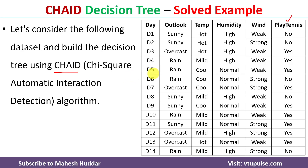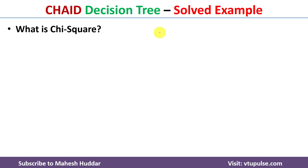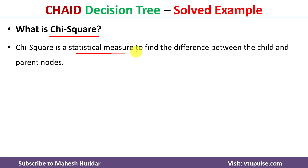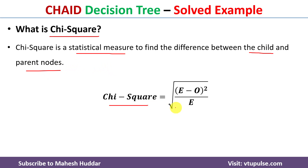Whenever we want to build a decision tree, we first need to identify the attribute which has maximum importance. We consider that as the root attribute and then start building the tree. The question is: how do we identify the attribute with maximum importance? We calculate the chi-square value for each attribute, and the one with the maximum value is considered the most important. Chi-square is a statistical measure used to find the difference between child and parent nodes. The equation is: chi-square equals the square root of (E minus O) squared divided by E, where E is the expected number of occurrences and O is the observed number of occurrences.